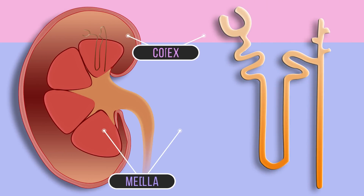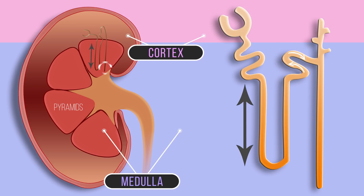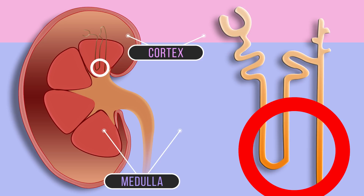The collecting duct carries fluid from the outer region of the medulla, next to the cortex, to the pyramids deep in the medulla. It passes through the same regions as the deep parts of the loops of Henle.